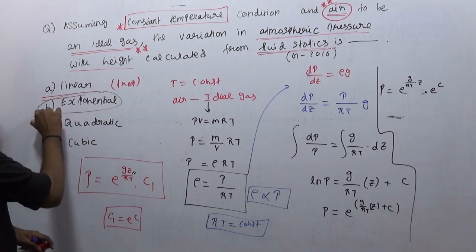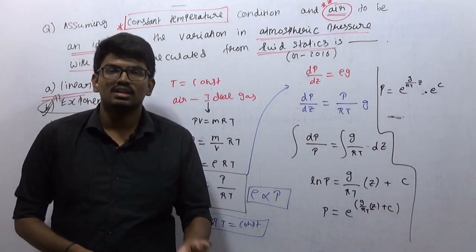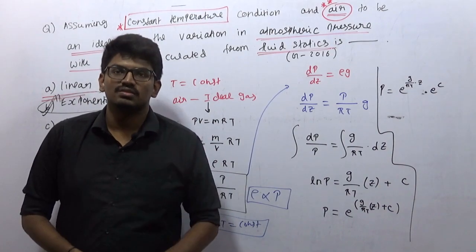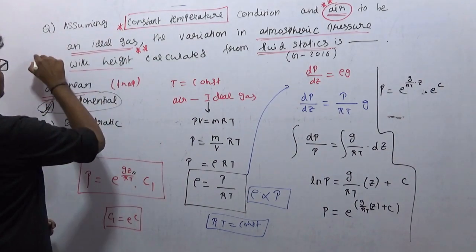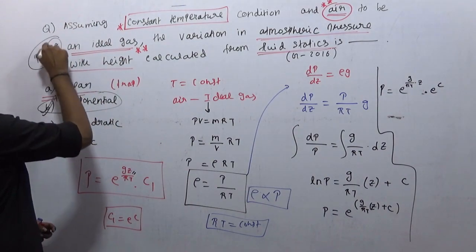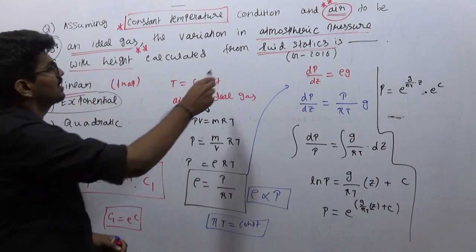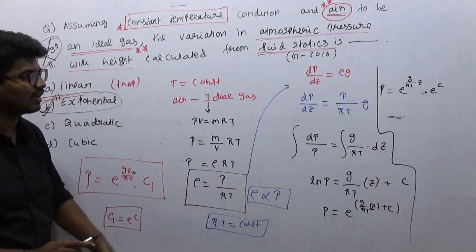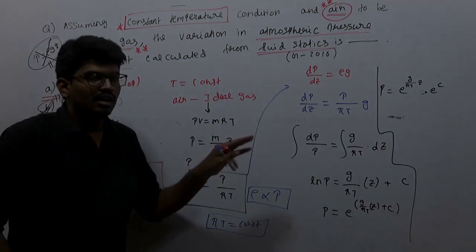The correct answer is B — exponential. This is why it is a very good question. Be very careful about assumptions and all the small things to take care of. When deriving P = ρgz, we assumed rho to be constant (incompressible). But here density is not constant — air is an ideal gas under constant temperature, so we must use the ideal gas equation under isothermal condition to find how pressure varies with z.